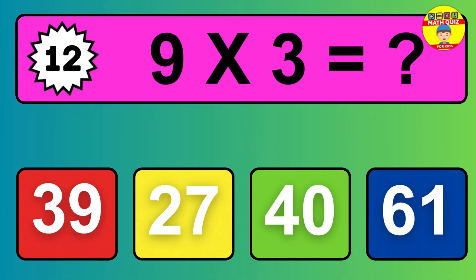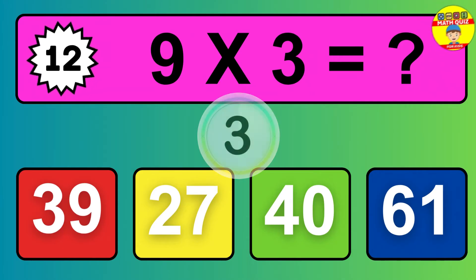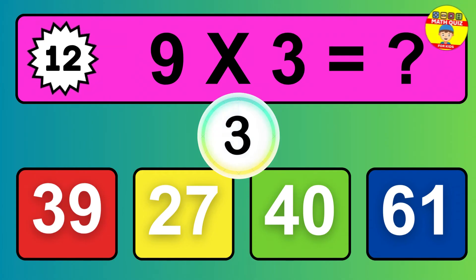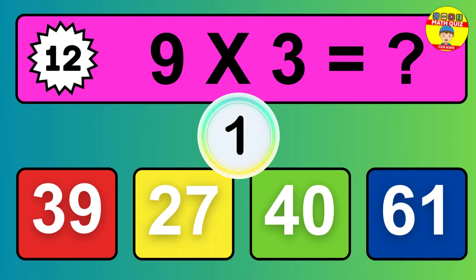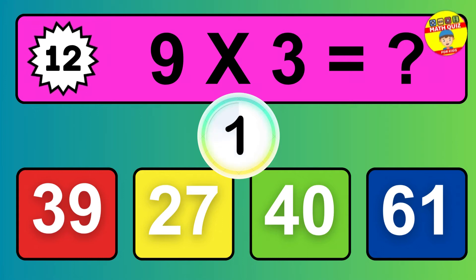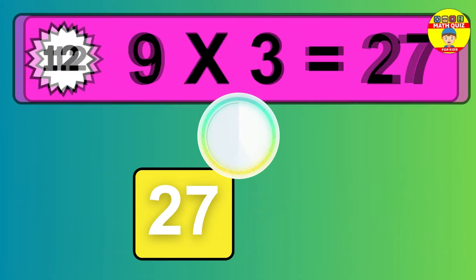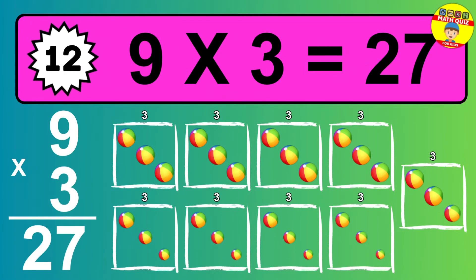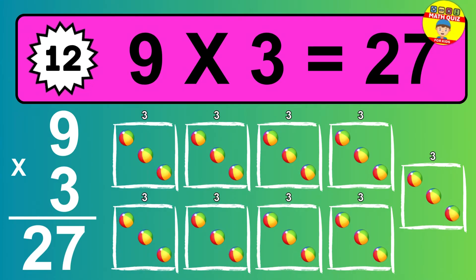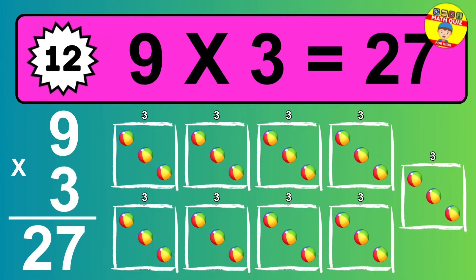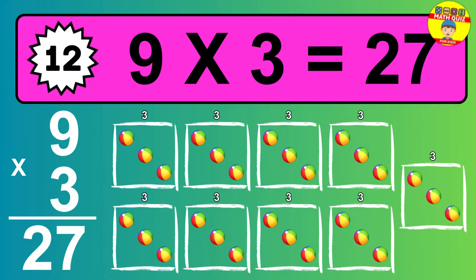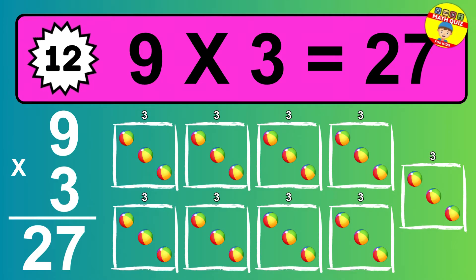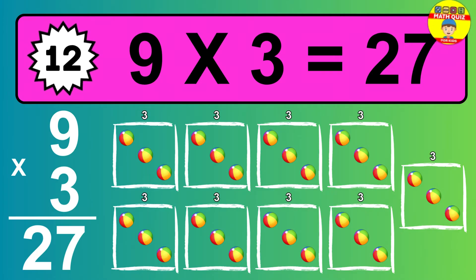Question 12. Nine times three equals what? The answer is nine times three is twenty-seven. To calculate, we have nine groups with three balls each one. So how many balls do we have? Twenty-seven balls.